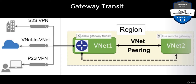For example, the subnet gateway can then let you communicate with a site-to-site VPN so that you can connect to an on-premise network. That means in this case, vNet2 can talk to on-premise infrastructure as well, because you have a site-to-site VPN connection from vNet1 to the on-premise infrastructure.